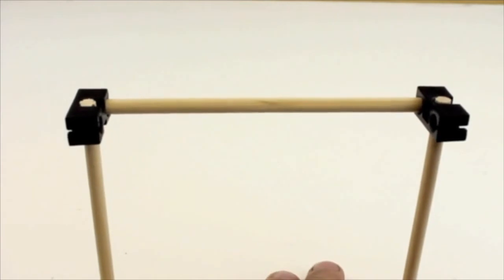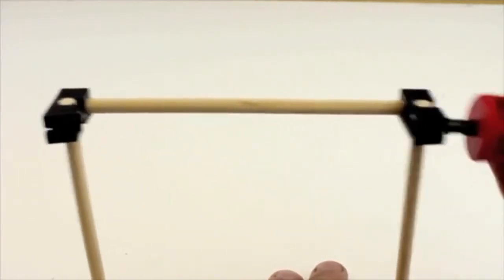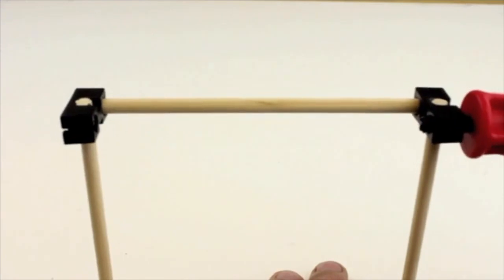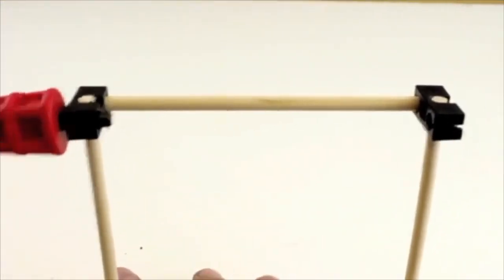Using your TeacherGeek reamer clean out the other holes of the perpendicular block. To use a reamer just simply twist it back and forth until it goes all the way through and then give it some full turns to clean out the rest of the hole.